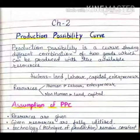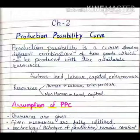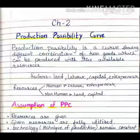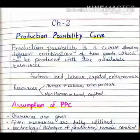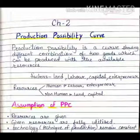There are some assumptions of PPC. First: resources are given. Second: given resources are fully utilized. Third: technology remains constant. Resources are given and the technique should remain constant — whether it is labor intensive or capital intensive. If we use labor intensive, then we should use only labor intensive. So we have to select which technique we have to follow.